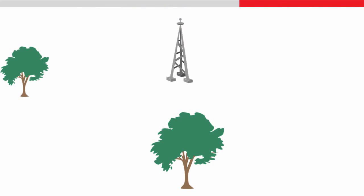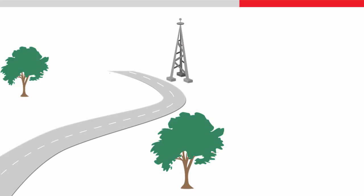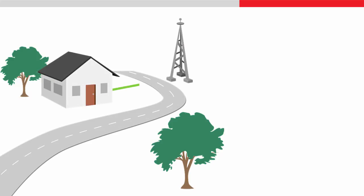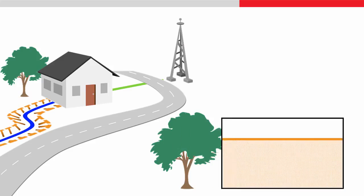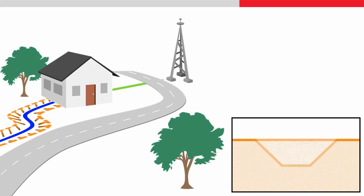We will use the example house project where several different lines form a road, a building footprint, a service line and a pipeline. Our task for this video is to stake the route of the pipeline and to mark where it is needed to dig slopes in order to lay the pipeline in a trench below the ground surface.